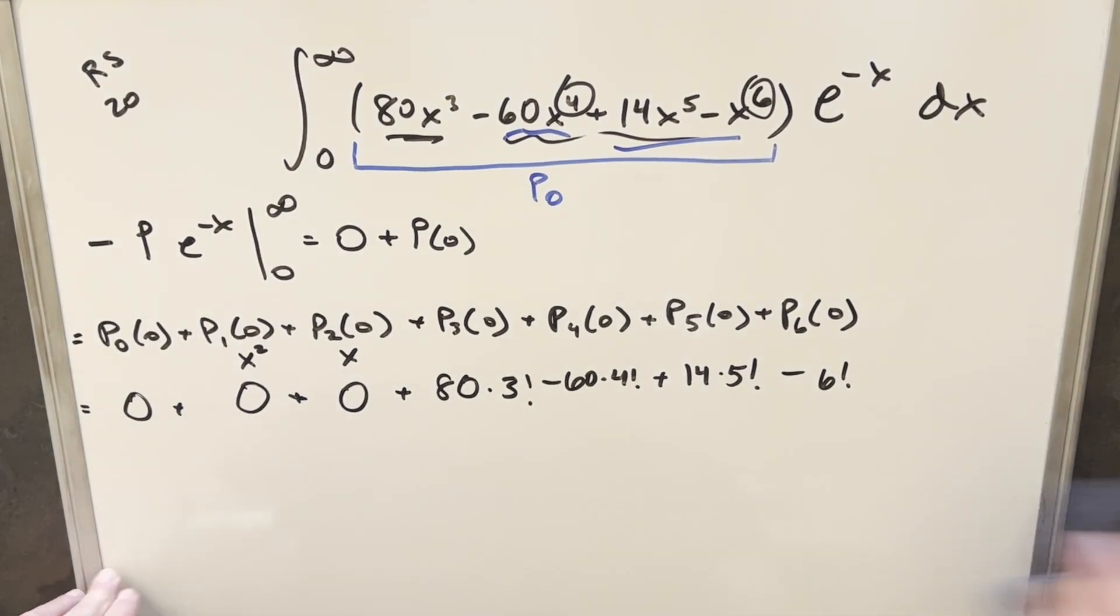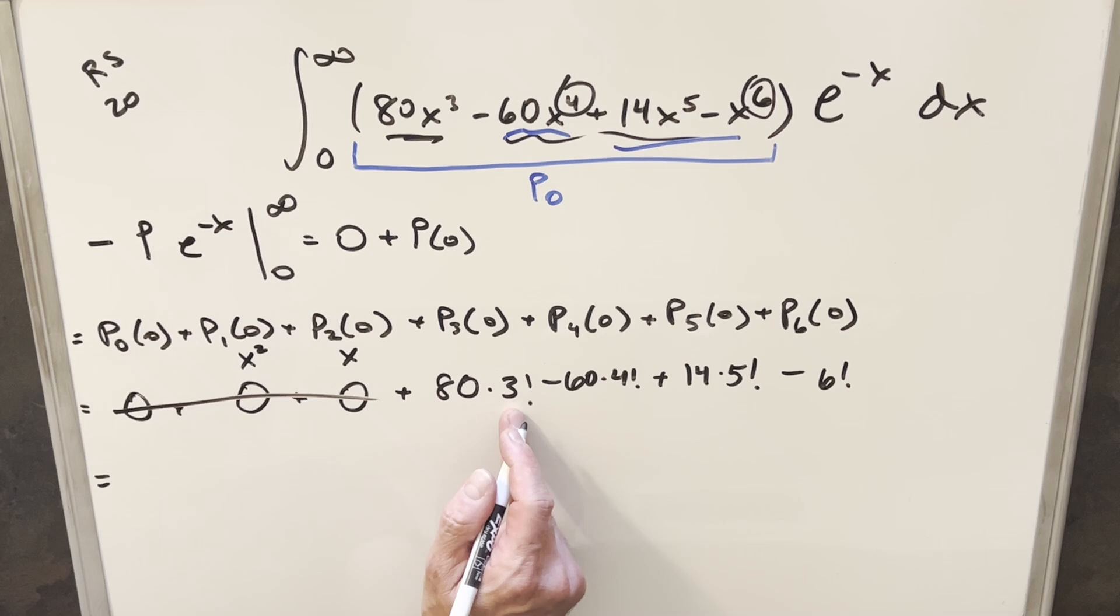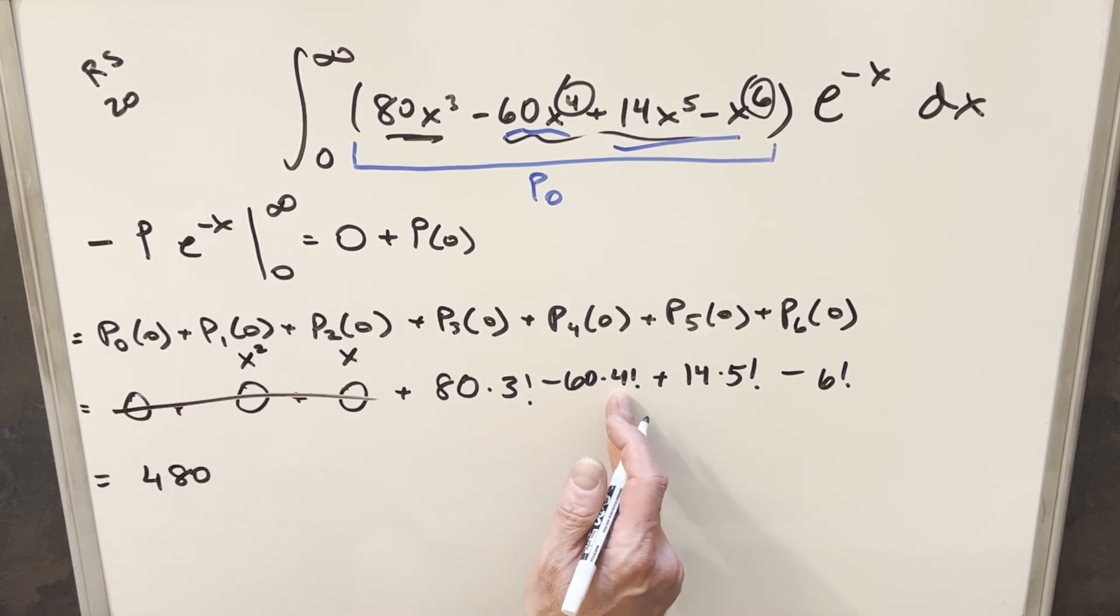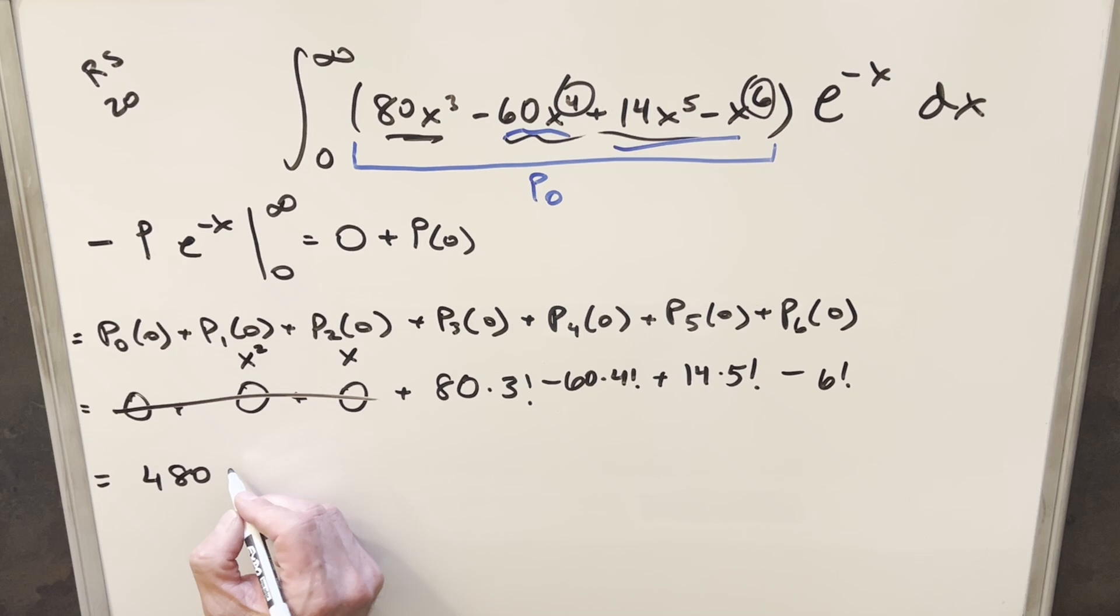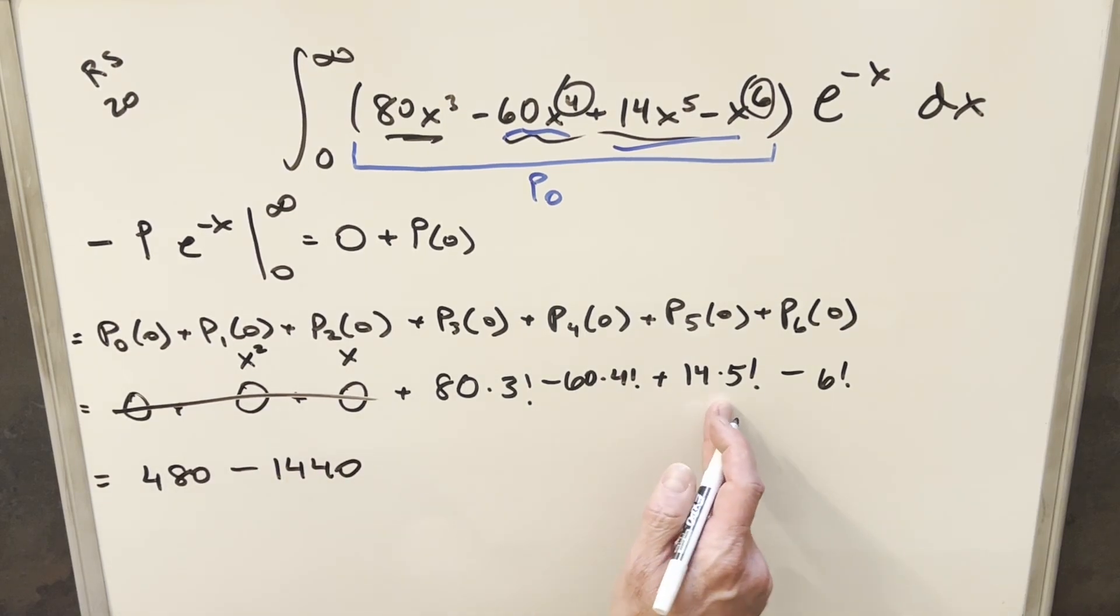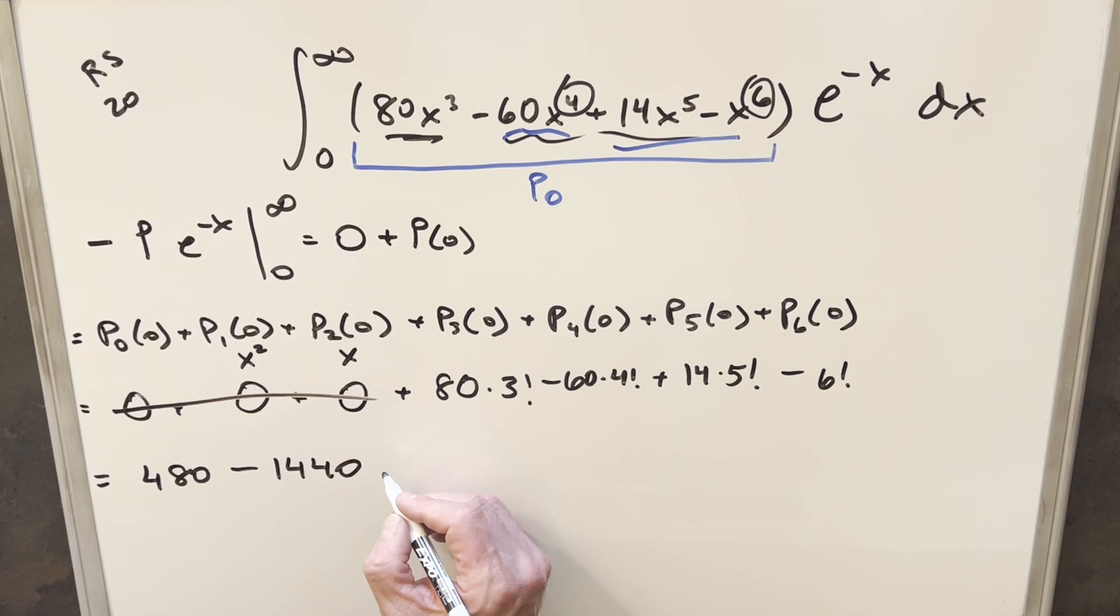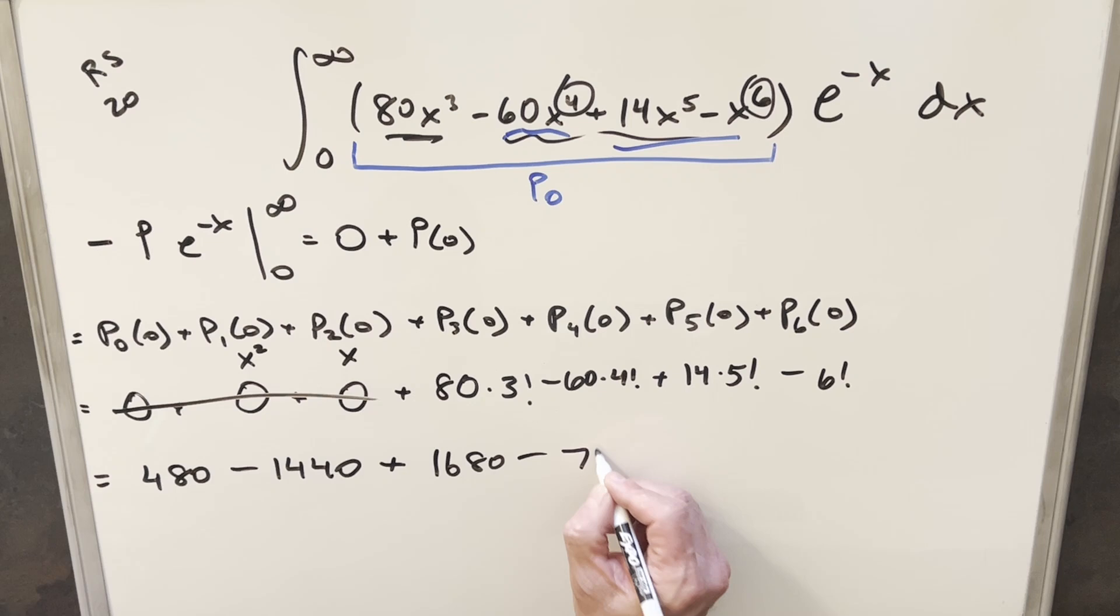So now what we need to do is just simplify this and finish it off. Of course, this is all zero. 80 times 3 factorial, well this is 6, so our first term is 480. Multiplying this out, 4 factorial is 24 times 60, this gives me minus 1440. Here, 5 factorial is 120 times 14, this is going to become plus 1680. And then finally, 6 factorial is just going to be 720.